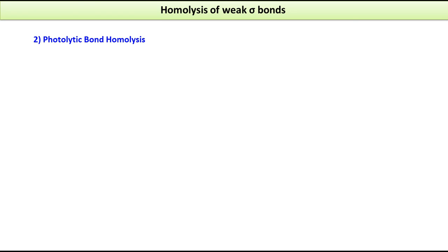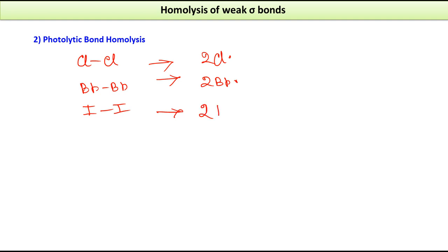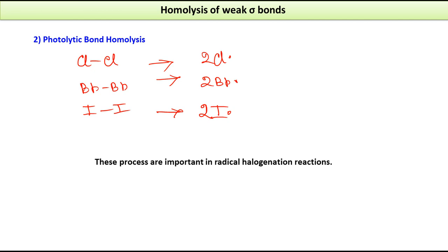The next method is photolytic bond homolysis. This is very common for diatomic halogen molecules: Cl₂ gives two Cl• radicals, Br₂ gives two Br• radicals, and I₂ gives two I• radicals. These processes are important in radical halogenation reactions, where a C–H bond is broken and replaced with a C–halogen bond.